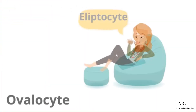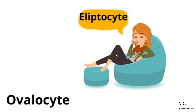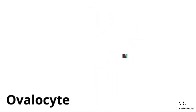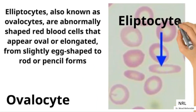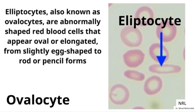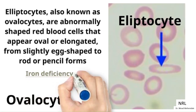Case 2: Elliptocytes. Red cells form an elongated oval shape. They can be seen in acquired disorders such as iron deficiency anemia.